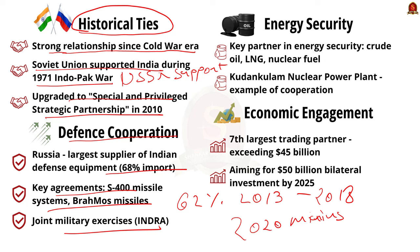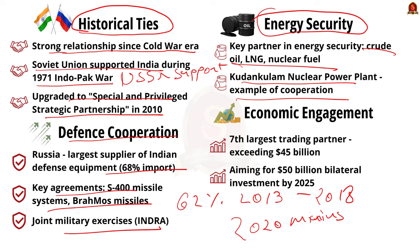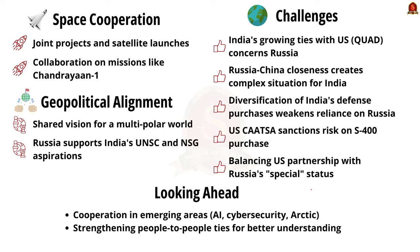Russia is also a key partner in India's energy security, supplying crude oil, LNG, and nuclear fuel. The Kudankulam nuclear power plant is a prime example of bilateral cooperation in the nuclear sector. On economic engagement, Russia is India's seventh biggest trading partner. Bilateral trade has reached US$45 billion, surpassing the target of US$30 billion by 2025. The two countries intend to increase bilateral investment to US$50 billion by 2025. Space is another significant area of cooperation, with joint projects and satellite launches, including collaboration on Chandrayaan-1.